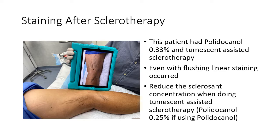In this patient, we used polidocanol due to possible asthma or some other respiratory issue. We used polidocanol 0.33% with tumescent-assisted sclerotherapy. Even with flushing, linear staining still occurred. So you'll want to reduce the sclerosant concentration when doing tumescent-assisted sclerotherapy — use polidocanol 0.25%.